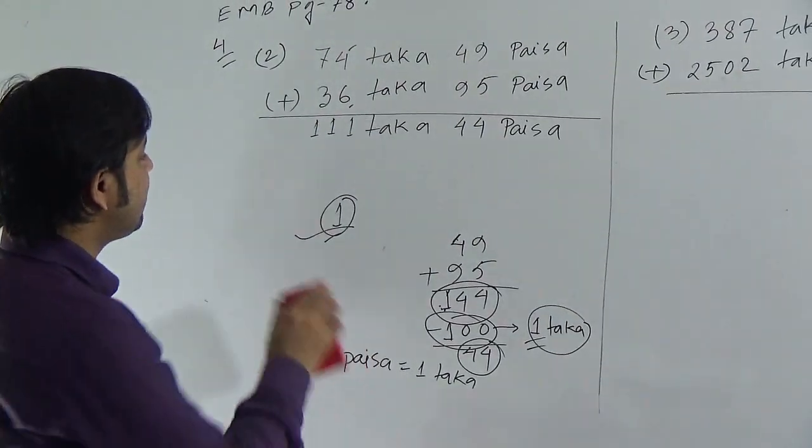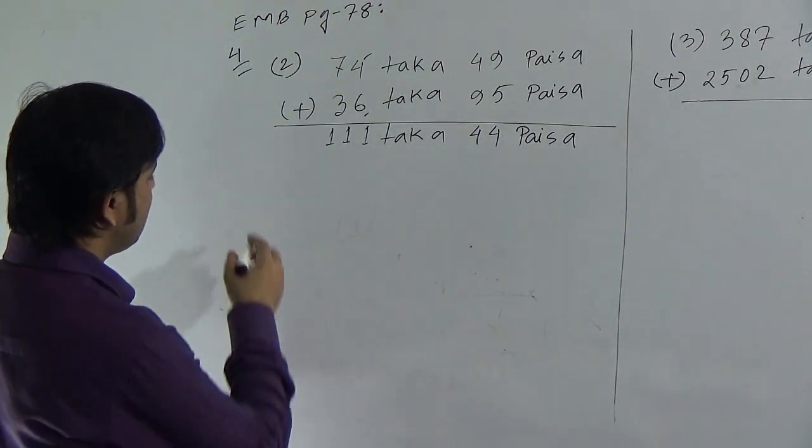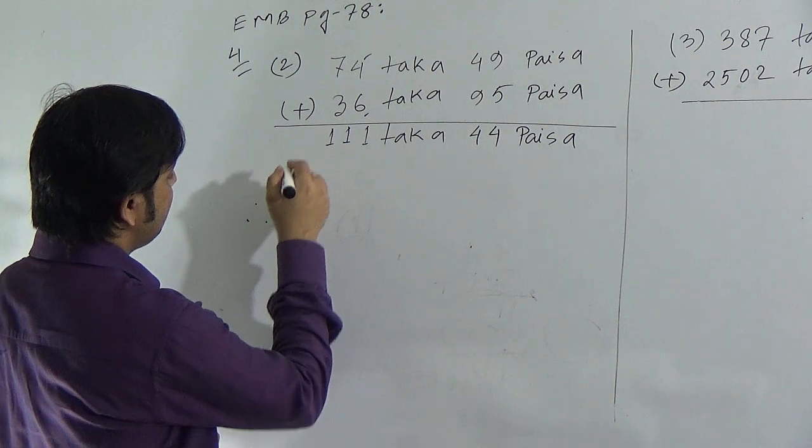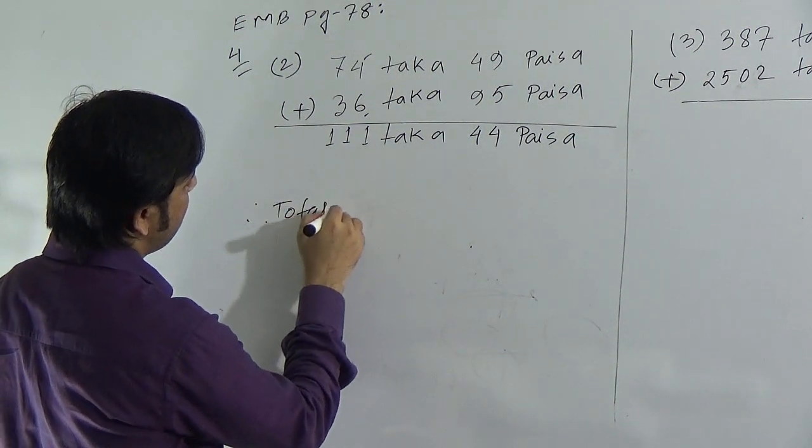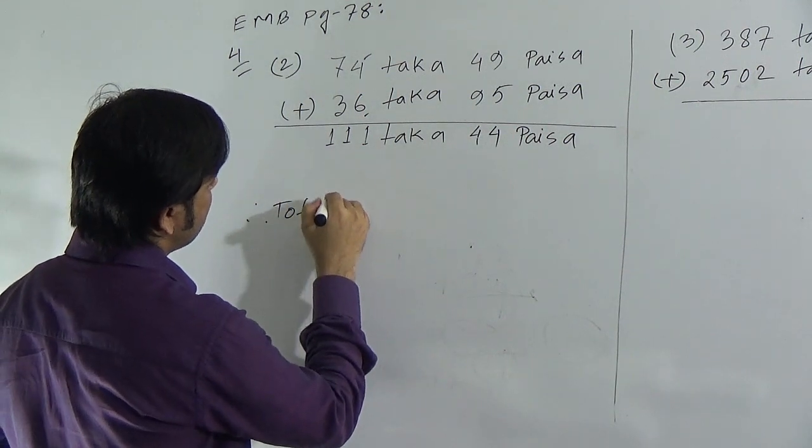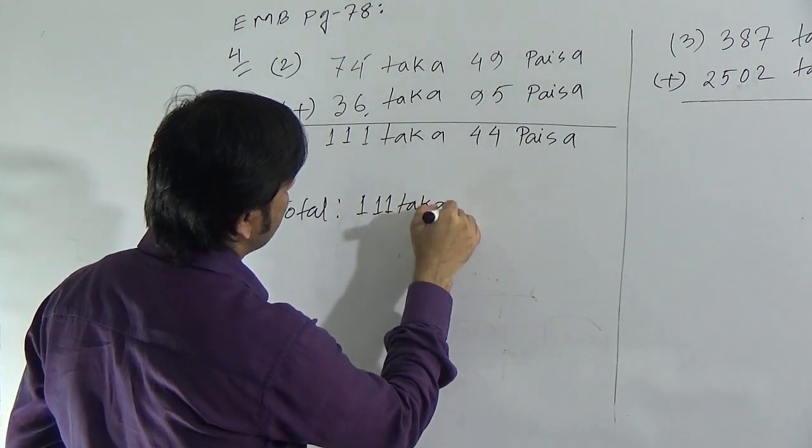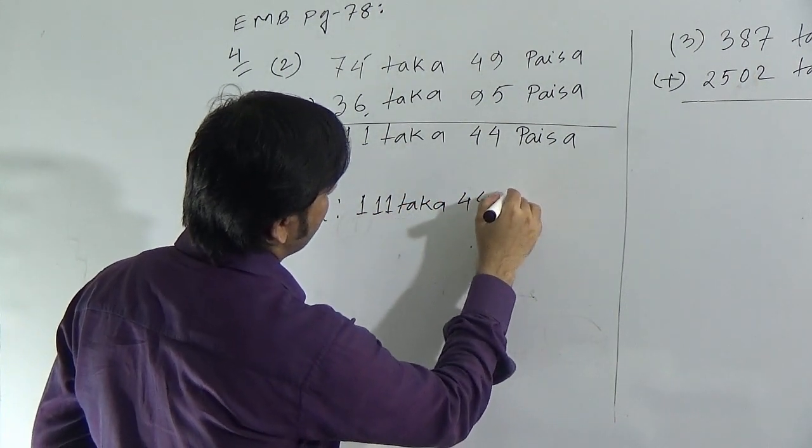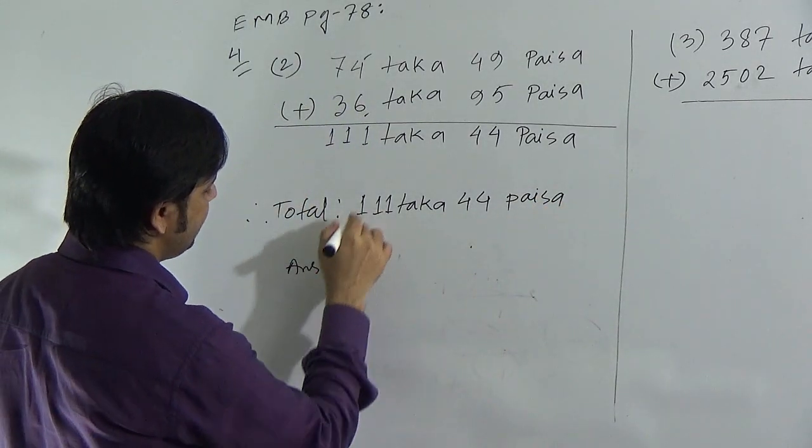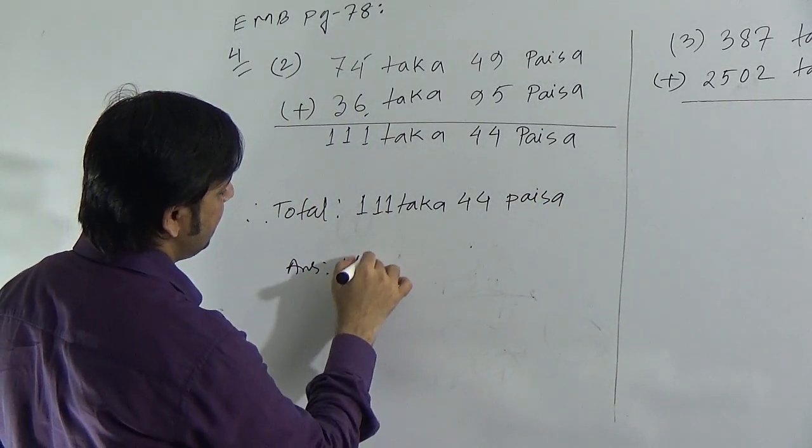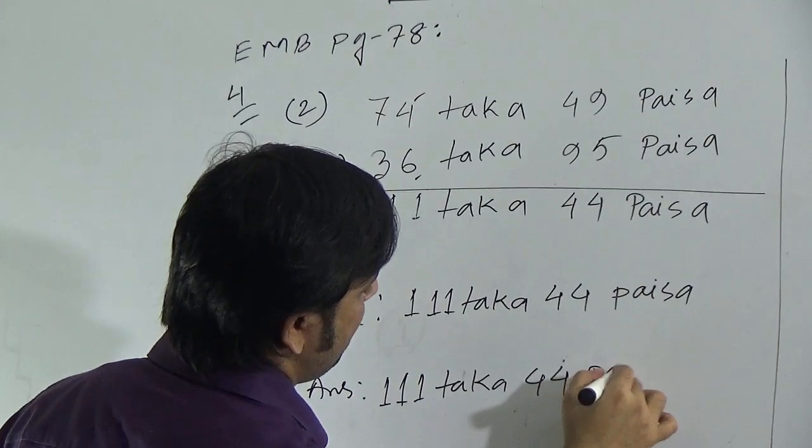So we can write total. Therefore, total. As we have added, we have to write total. So the sum is 111 taka 44 paisa. And we can write our answer: 111 taka 44 paisa.